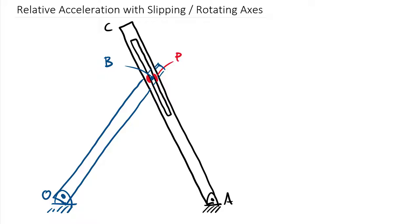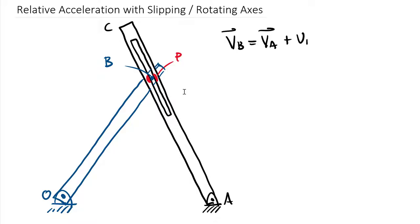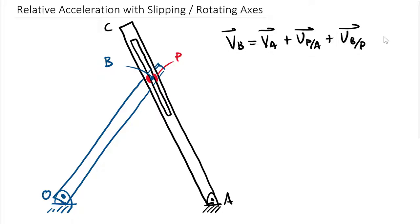You hopefully remember from our previous lecture on this topic: we wrote a relative velocity equation relating the velocity of B with the velocity of P. The velocity of B equals the velocity of A, plus the velocity of P relative to A, plus the velocity of B relative to P. Keeping in mind with all these subscripts that if we take the product of the subscripts on both sides, we fundamentally end up with B equals B — which tells us we got everything in the right order.